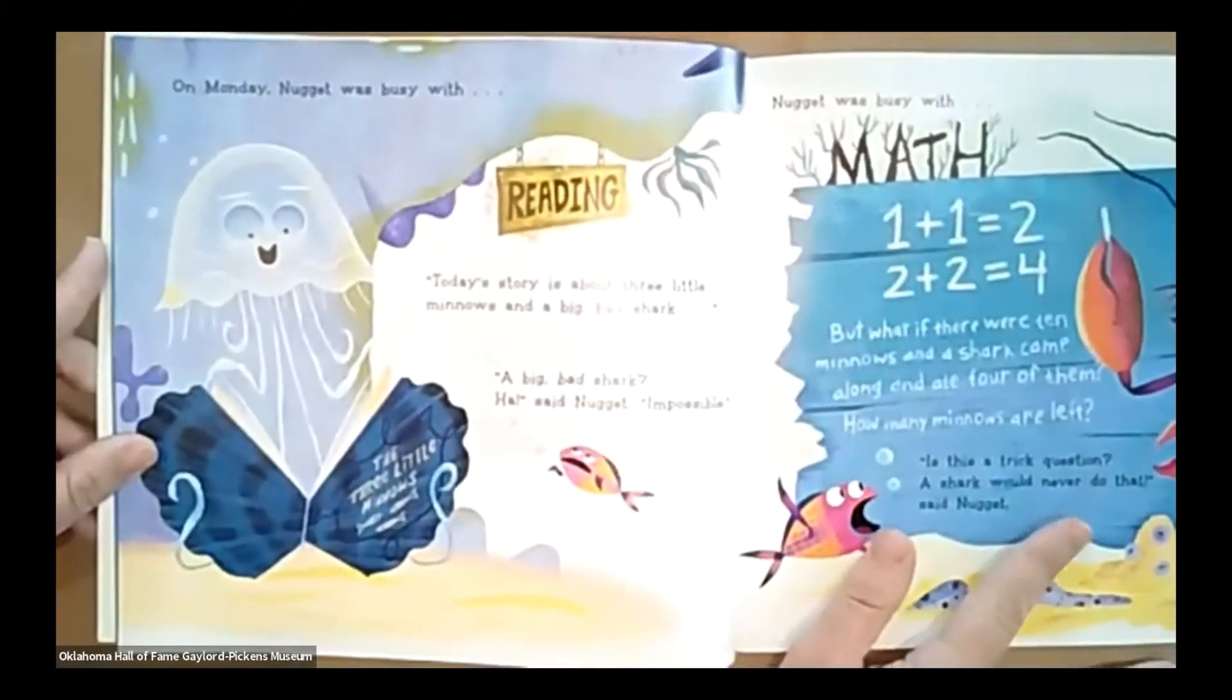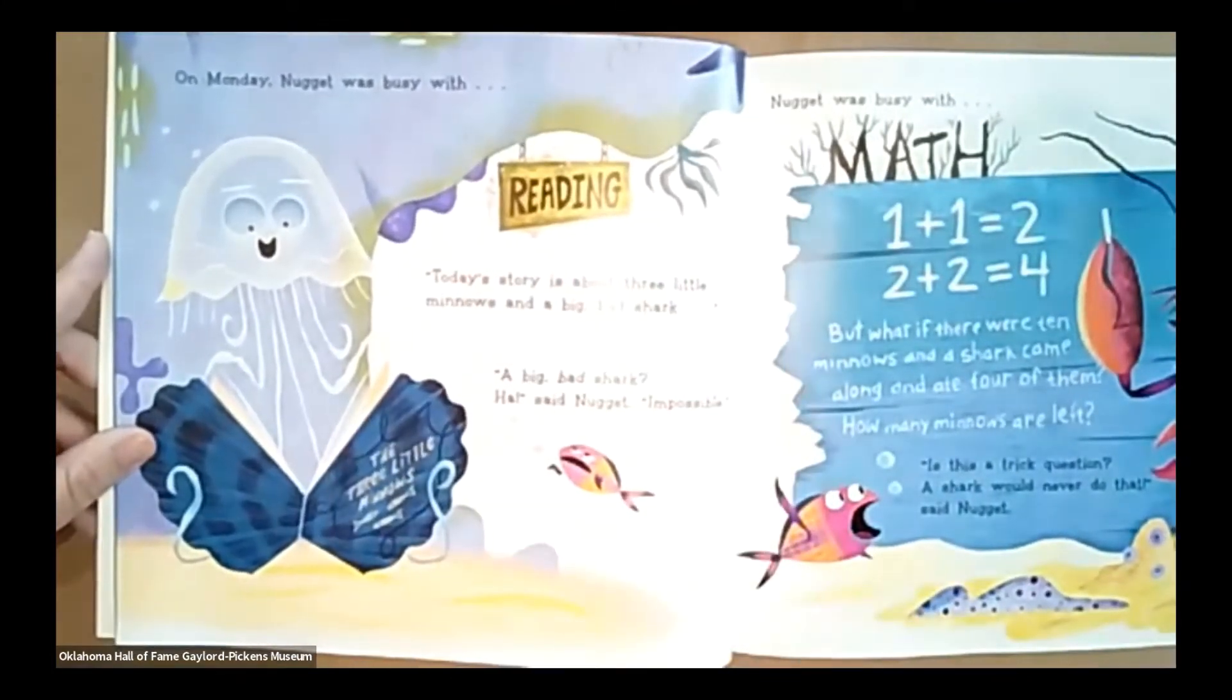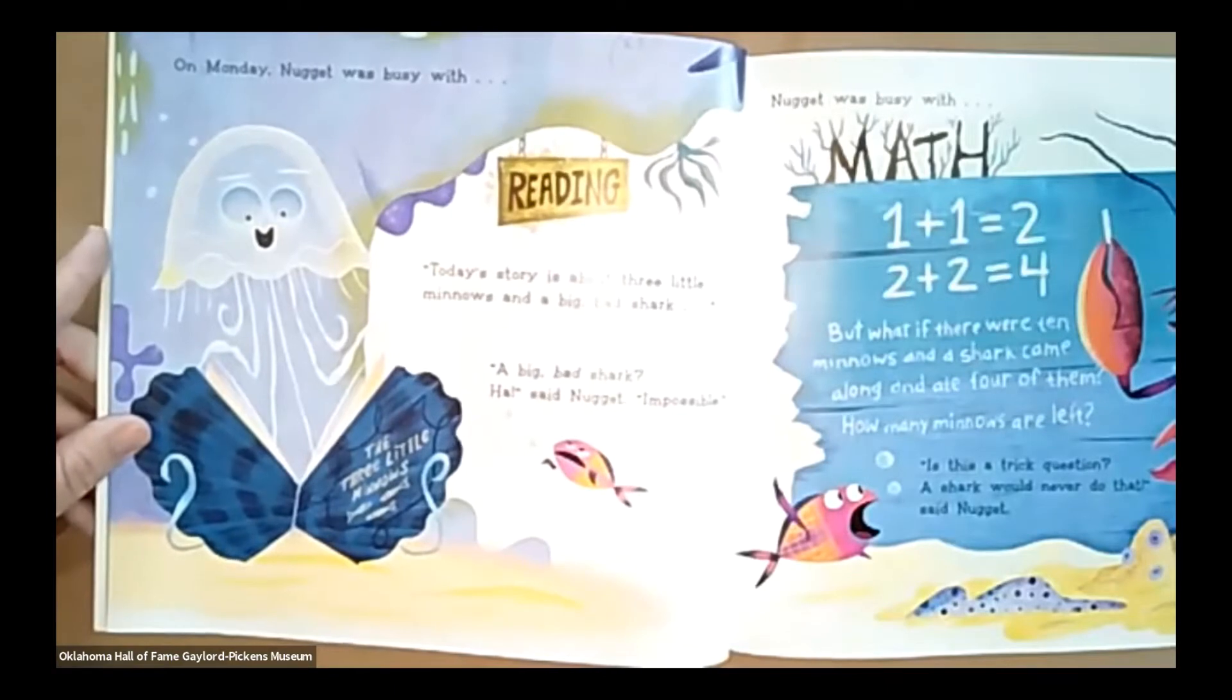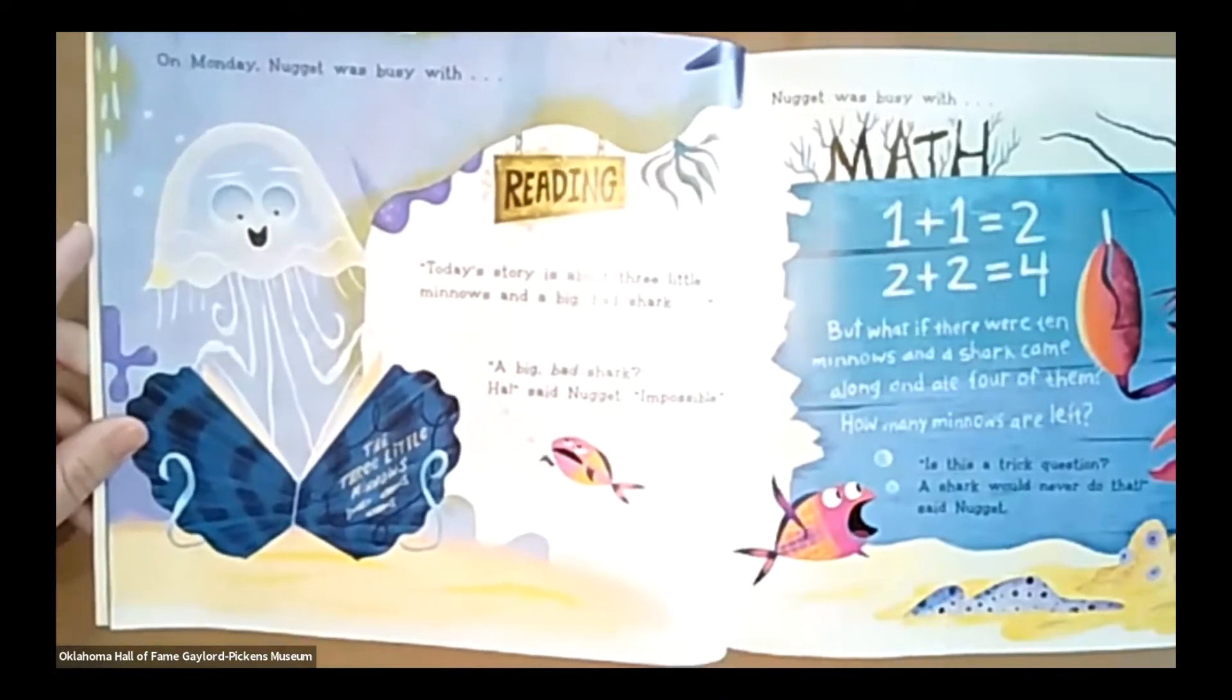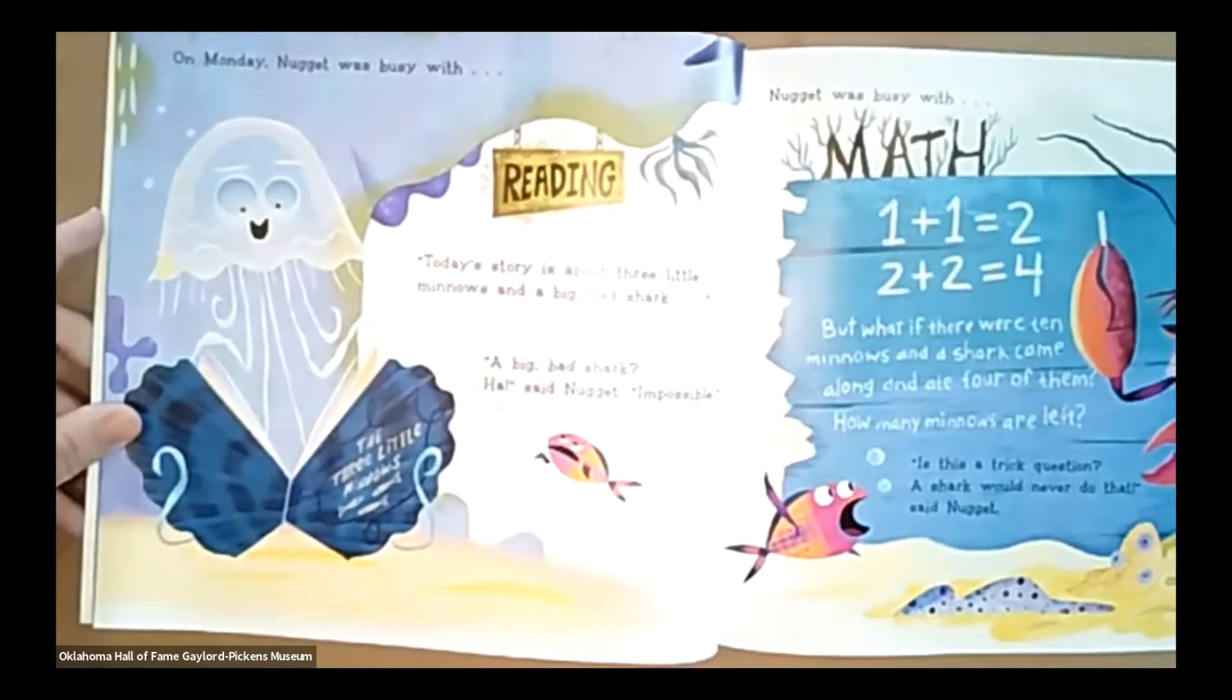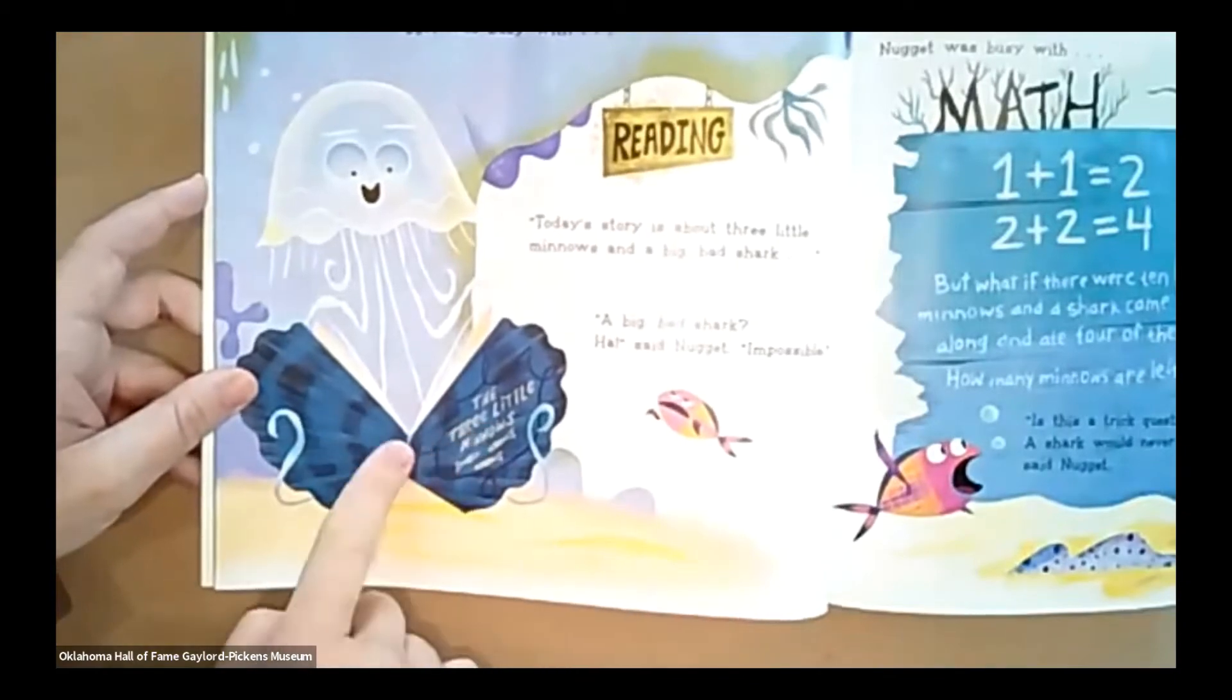On Monday, Nugget was busy with reading. Today's story is about three little minnows and a big, bad shark. A big, bad shark. Ha, said Nugget. Impossible. See, they're reading on the clam shells for their book. It's the three little minnows.